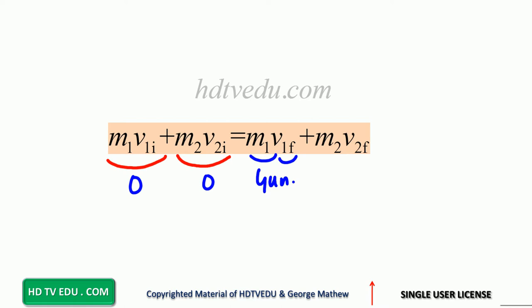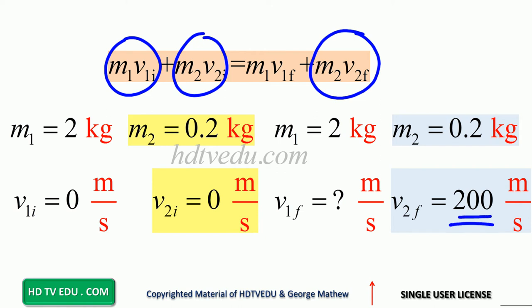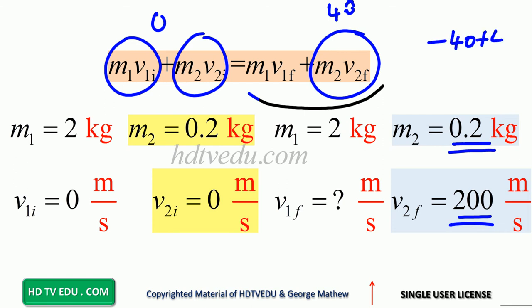After we fire the gun, the bullet goes to the right at 200 meters per second. The mass of the bullet is 0.2 kg. Before we fire the gun, momentum of the bullet is zero. After firing, the bullet's momentum is mass times velocity: 0.2 times 200 equals 40. So what number will make the total momentum equal to zero? It has to be negative 40.